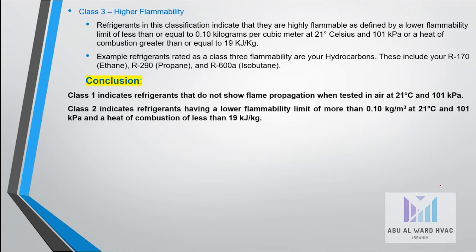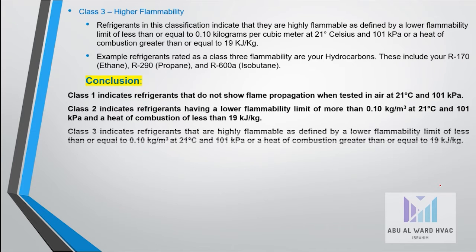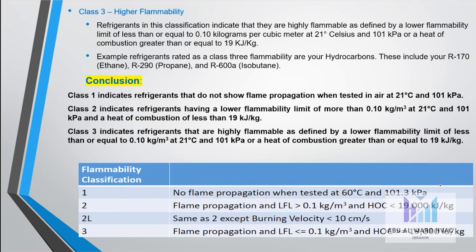In conclusion, class 1 indicates refrigerants that do not show flame propagation, class 2 indicates refrigerants having lower flammability, and class 3 indicates refrigerants that have high flammability. So in total, we have four main flammability classes: 1, 2, 2L, and 3.